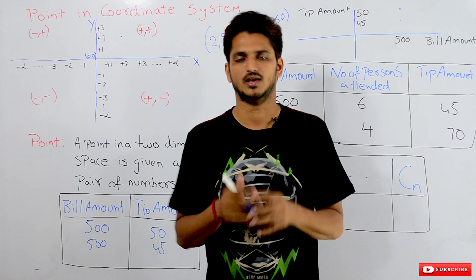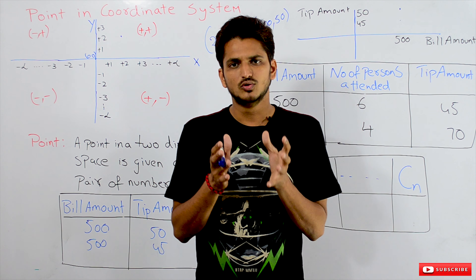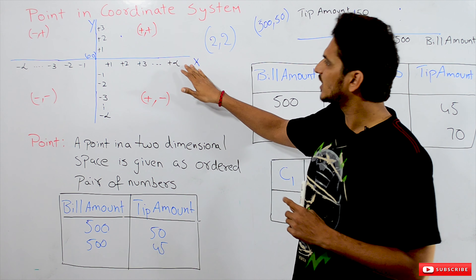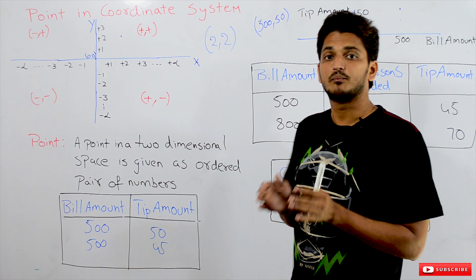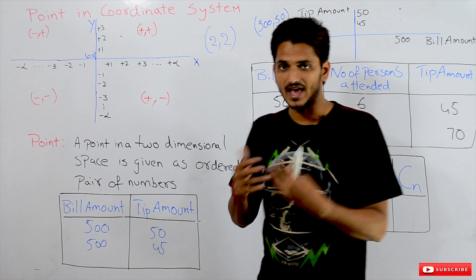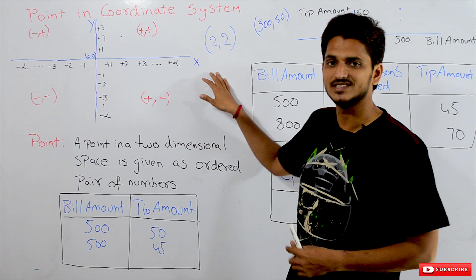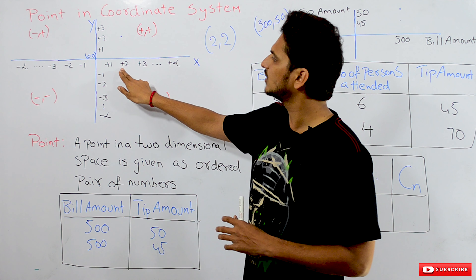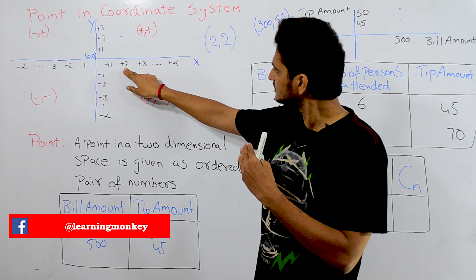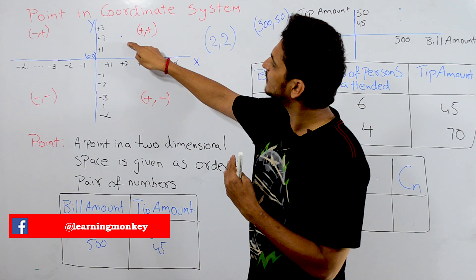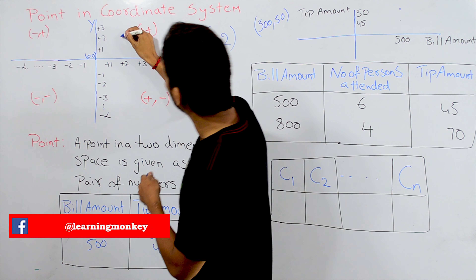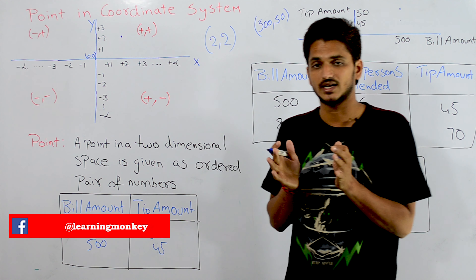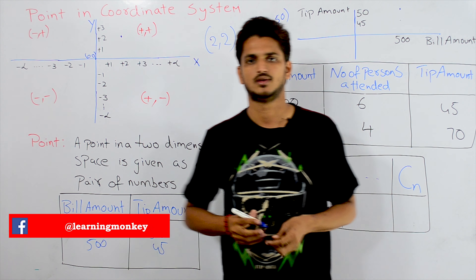This is how a two-dimensional coordinate space looks like. It has two coordinates: the X coordinate and Y coordinate. A point in a two-dimensional coordinate space is given as an ordered pair of numbers. For example, (2, 2) means we move two units towards the positive side of the X axis and two units towards the positive side of the Y axis — this is where our point lies.